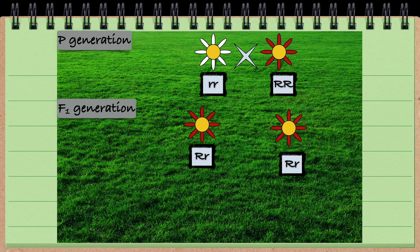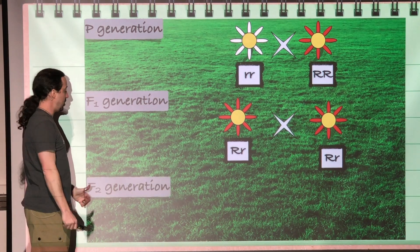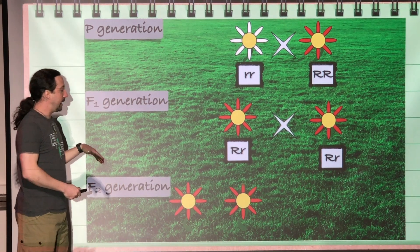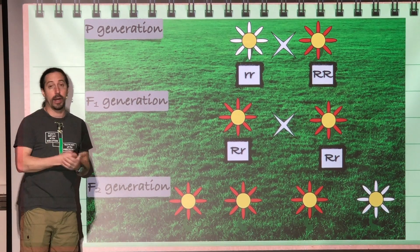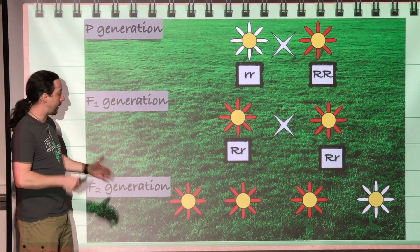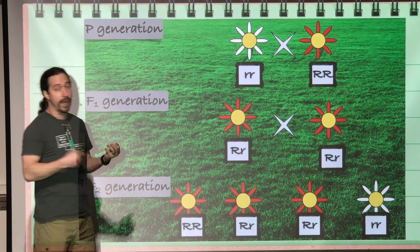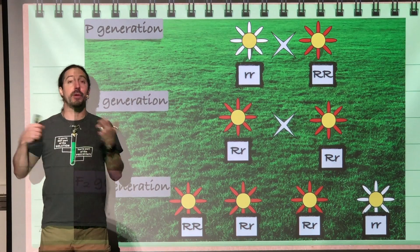Now if we took this F1 generation and crossed it, we would see the exact ratios we would expect: three out of four times we would anticipate a red flower, and one out of four times a white flower. We would expect 25% to be homozygous dominant, 50% to be heterozygous, and 25% to be homozygous recessive. That would be what we would anticipate.